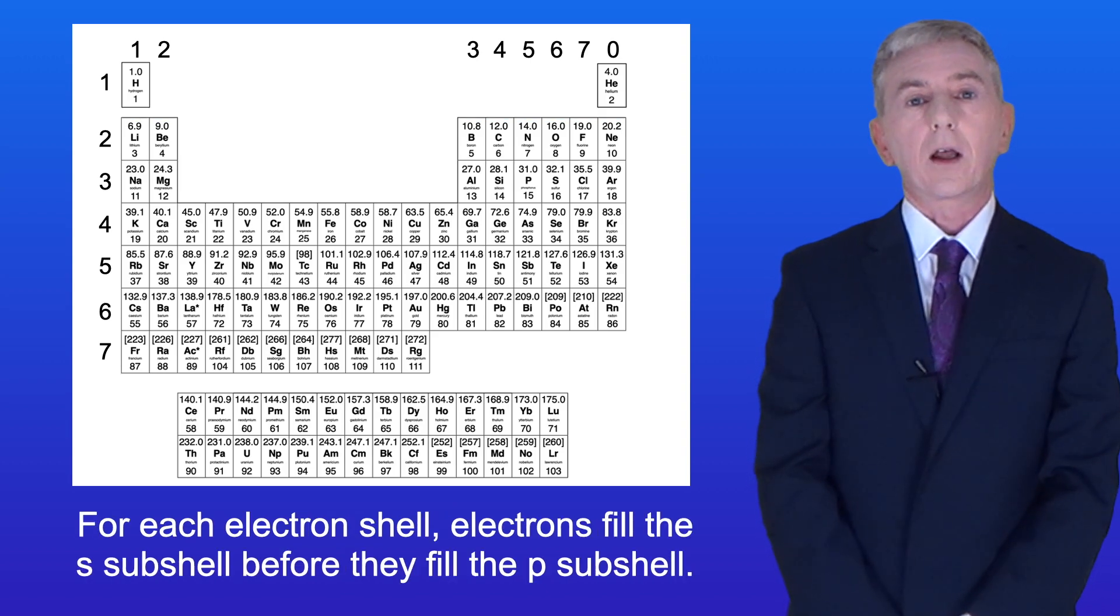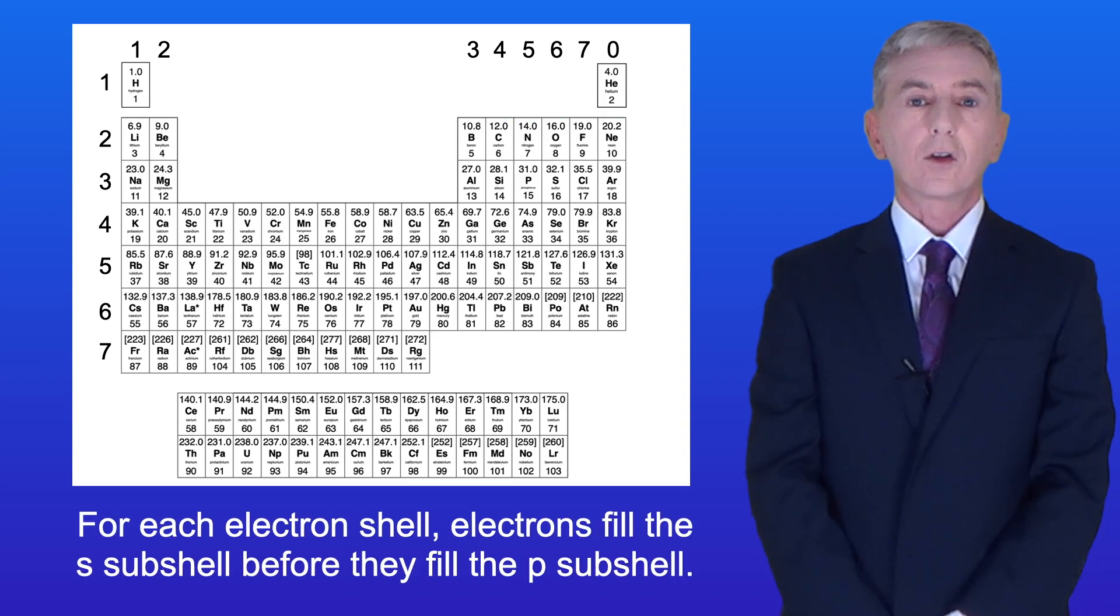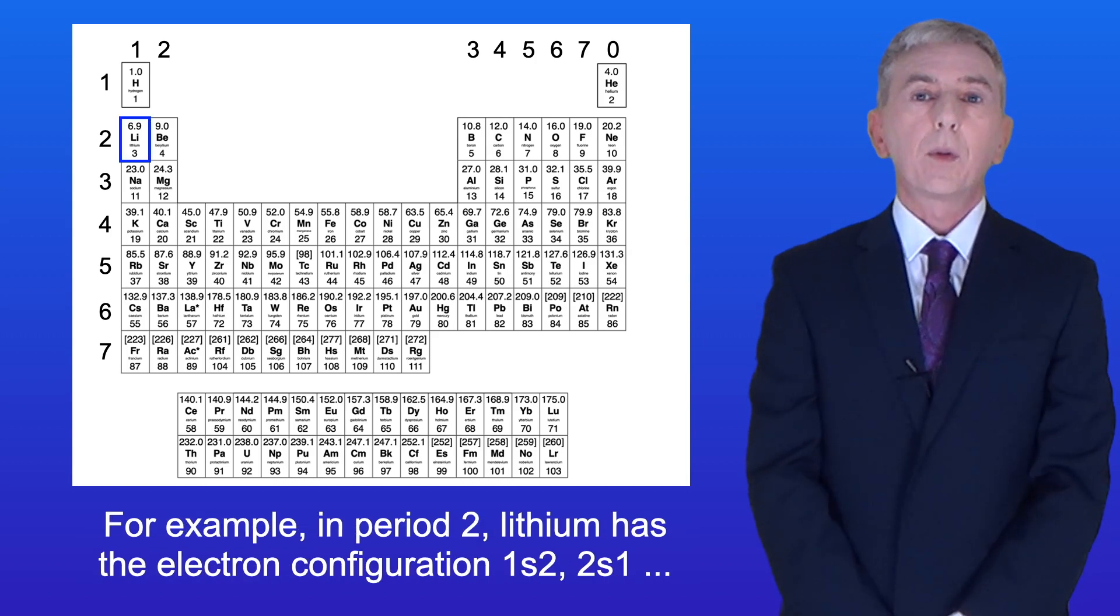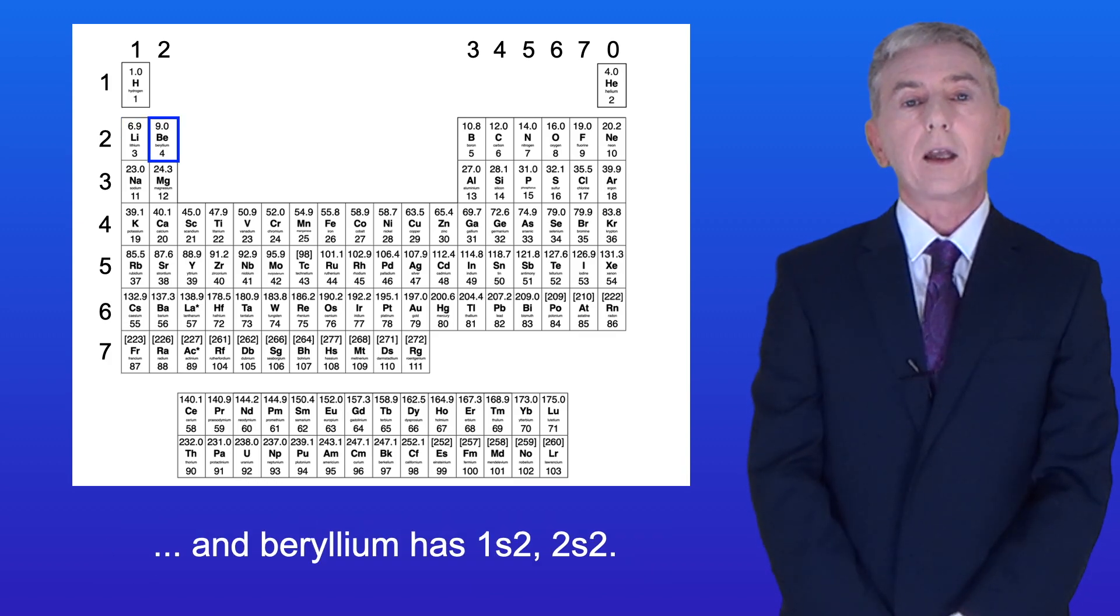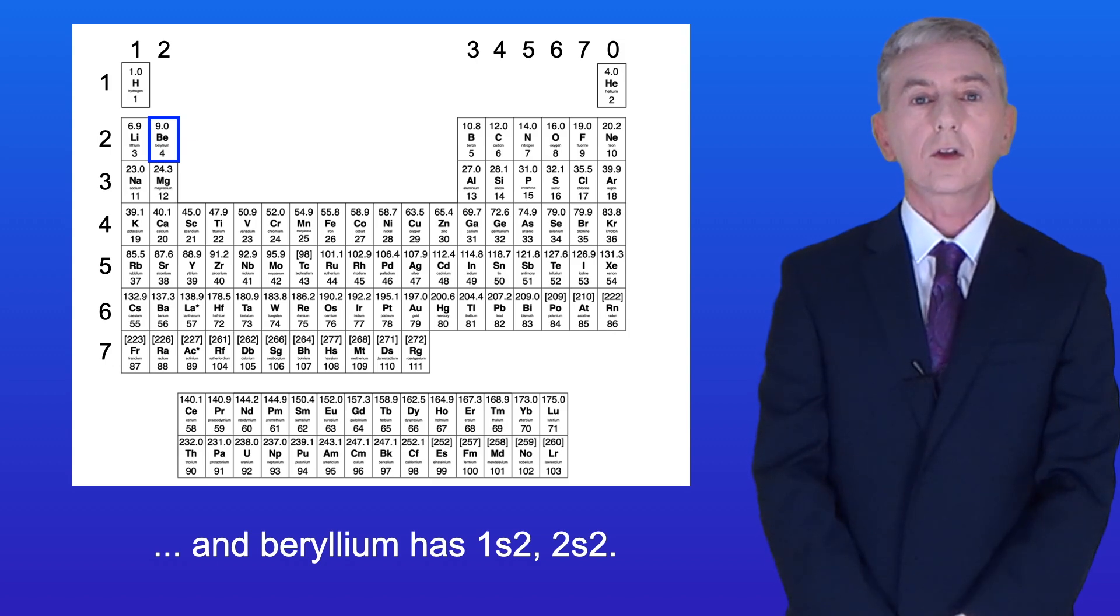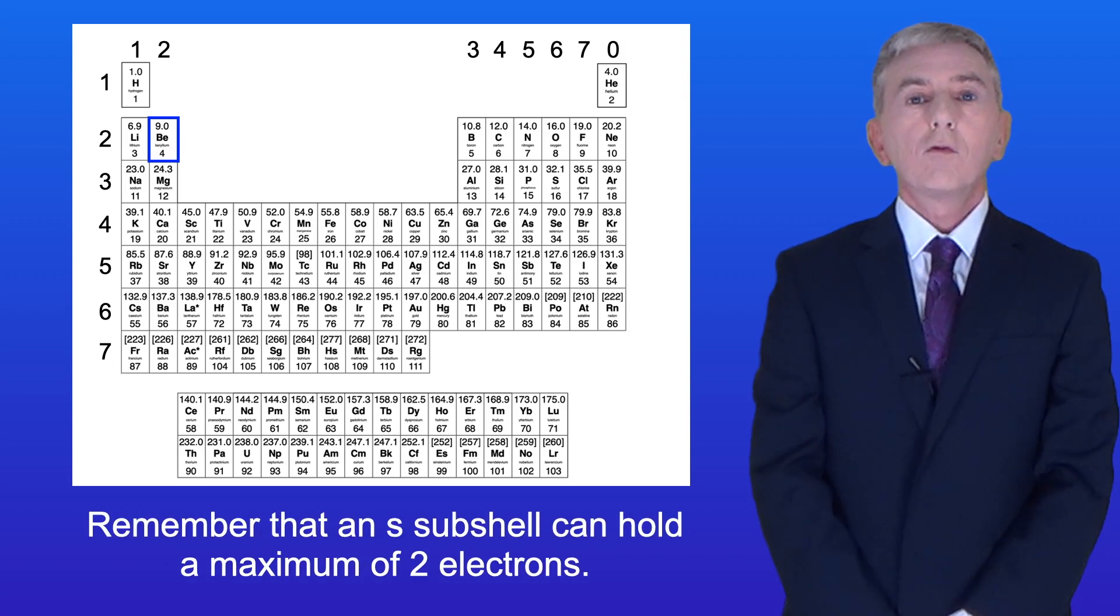Now for each electron shell, electrons fill the s-subshell before they fill the p-subshell. For example, in period 2, lithium has the electron configuration 1s2 2s1 and beryllium has 1s2 2s2. Remember that an s-subshell can hold a maximum of two electrons.